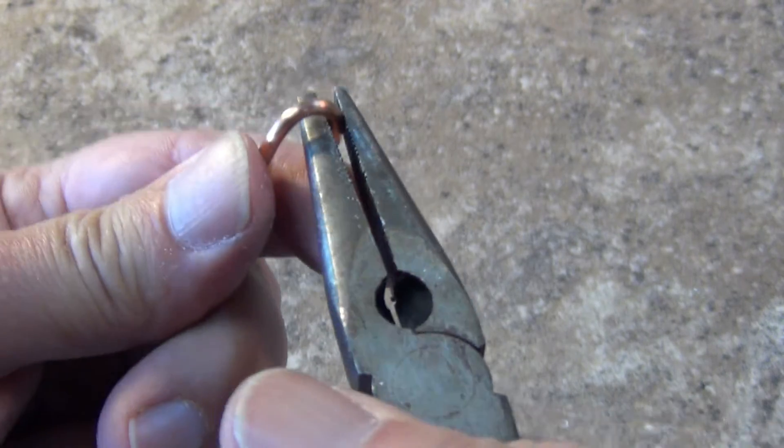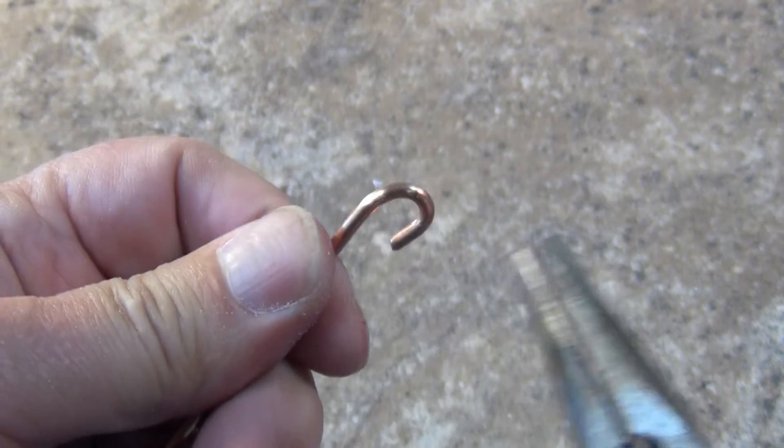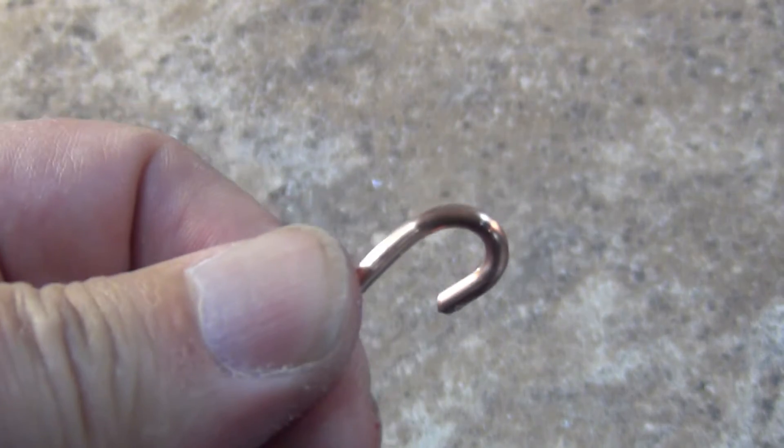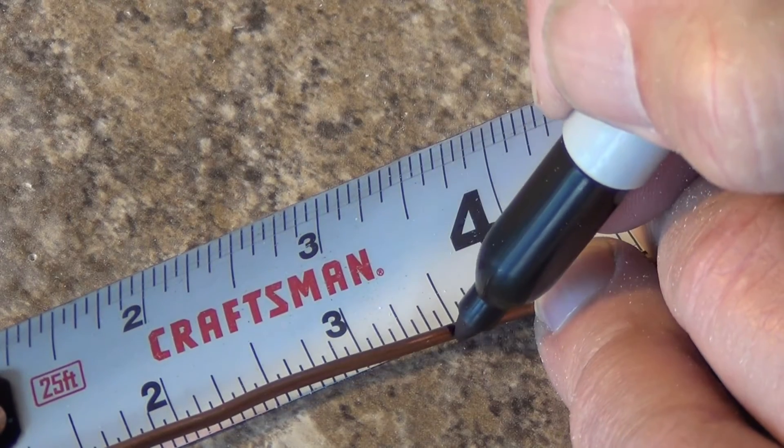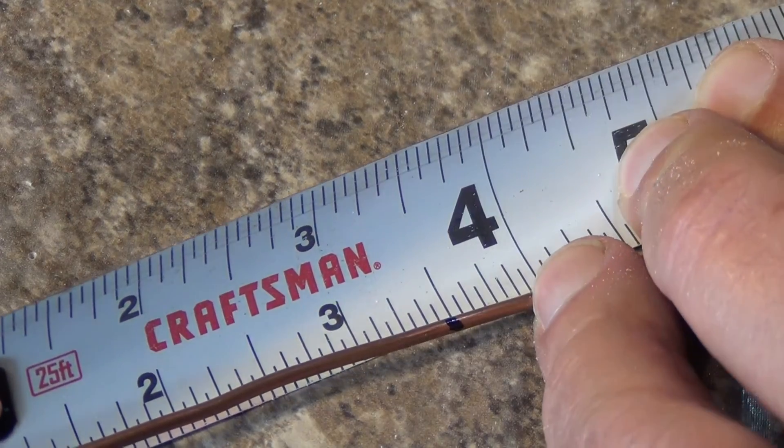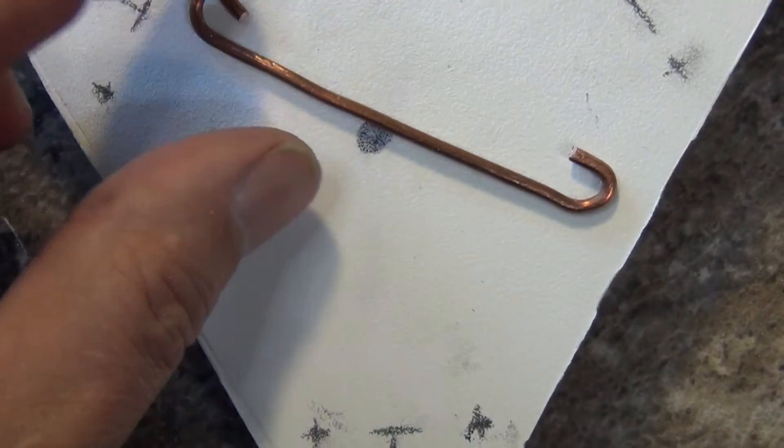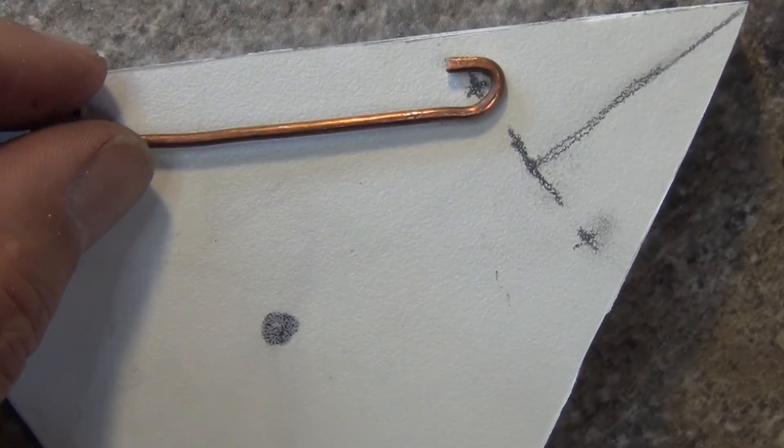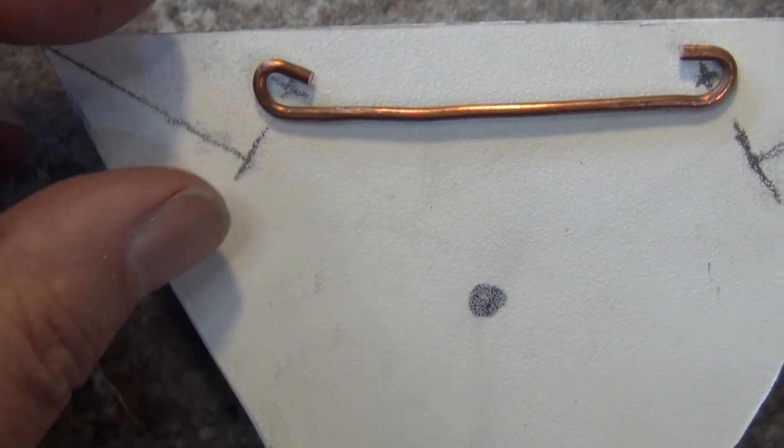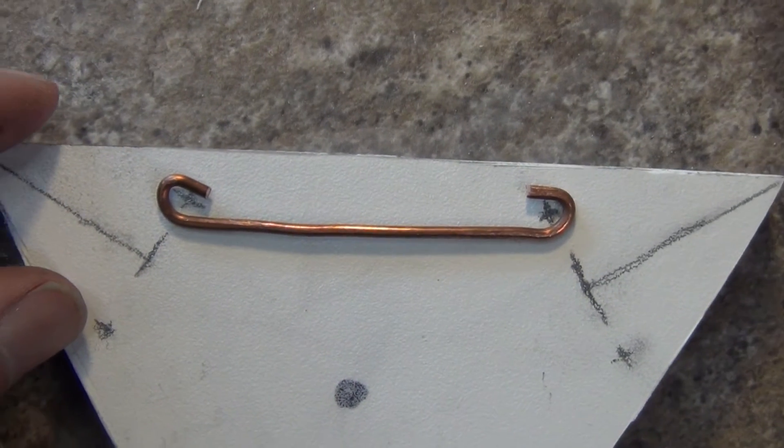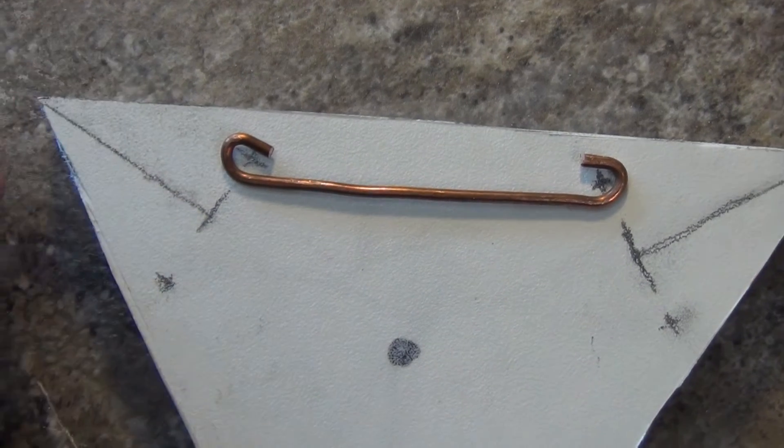Using the needle nose pliers again, I bend in terminal hooks at the end of each wire square. I take the 14 gauge wire and cut it into two 3 and a half inch lengths. I bend terminal hooks into each end. Then I measure them against the triangle terminal points like this to make sure they fit. These will act as jumpers between the antenna elements.